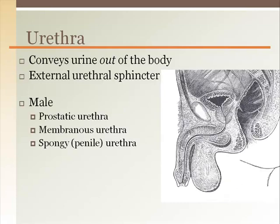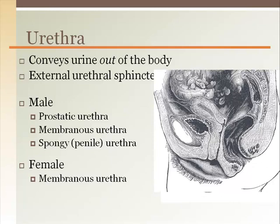In the male, the urethra has three segments. The prostatic urethra travels along the prostate, which lies immediately below the bladder surrounding the urethra. The membranous urethra is between the prostate and the base of the penis. The penile urethra travels along the penis. In females, there is only the membranous urethra.